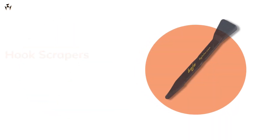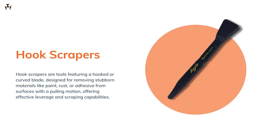The last on the list is the hook scraper. It looks a bit like a flat scraper, but its tip is bent at a 90-degree angle. So it's used in places where a regular flat scraper can't reach. The hook scraper makes scraping the center of big flat surfaces very easy.